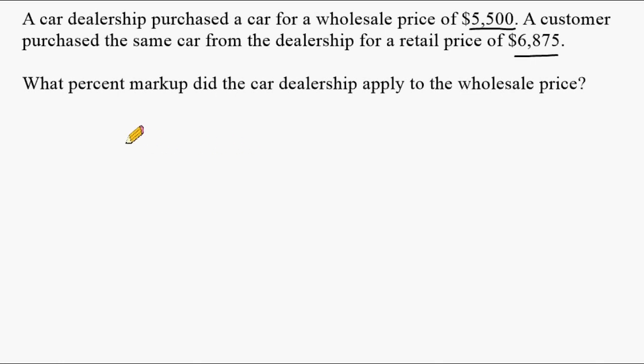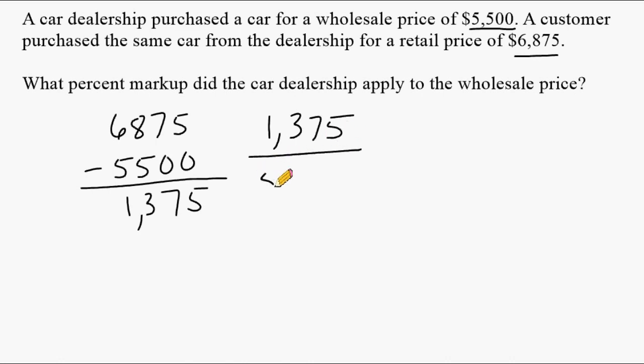So the first thing that we're going to do is take the retail price of $6,875 and subtract from that the wholesale price of $5,500. And what we see is that the price increased by a total of $1,375. So this amount right here represents a percent of the original amount.